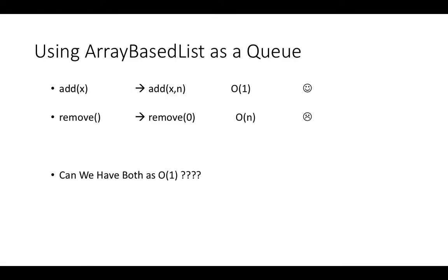In the previous video we saw how to use ArrayBaseList as a stack, and it was very efficient because we can have push and pop operations in O(1). So we have fast operations for push and pop. How about using the ArrayBaseList as a queue?